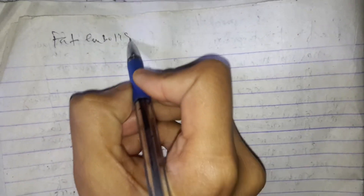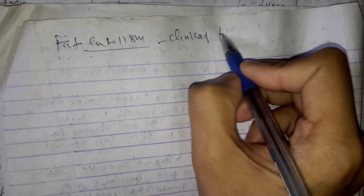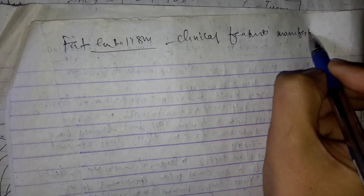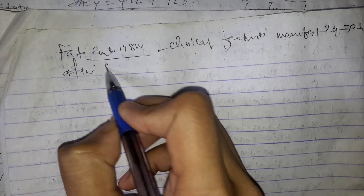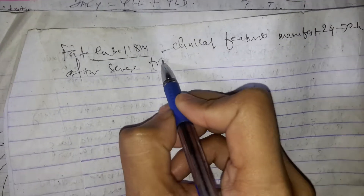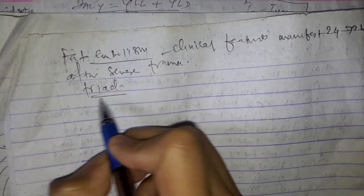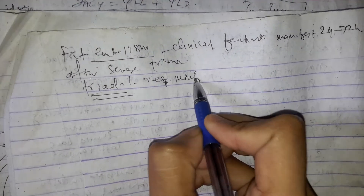Let's talk about fat embolism. The clinical features manifest 24 to 72 hours after severe trauma. It is characterized by a triad. The first component of the triad is respiratory insufficiency.